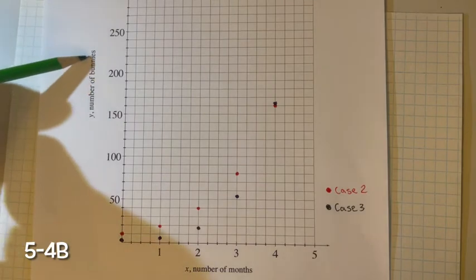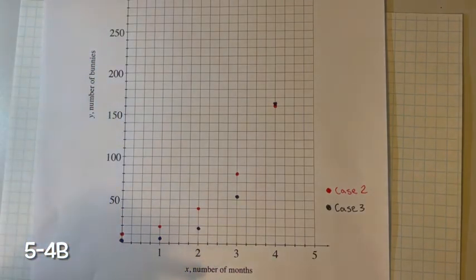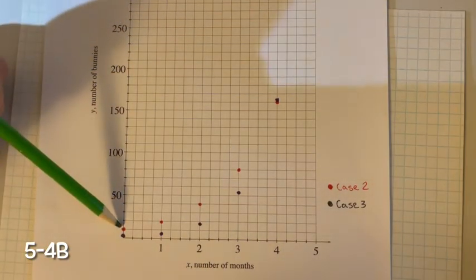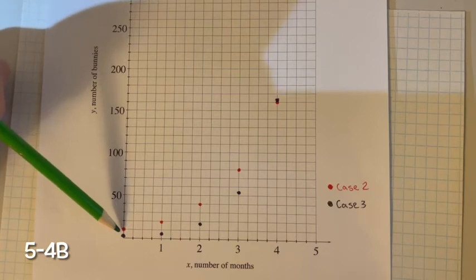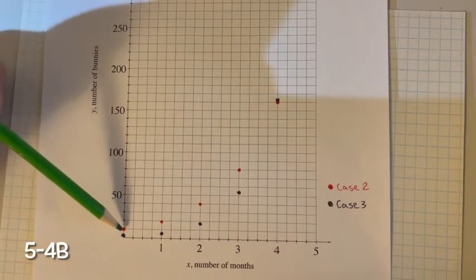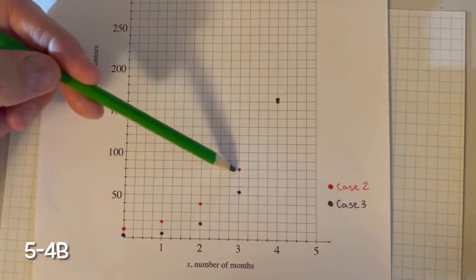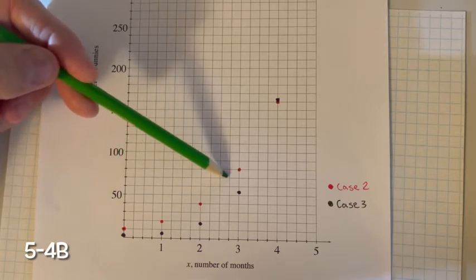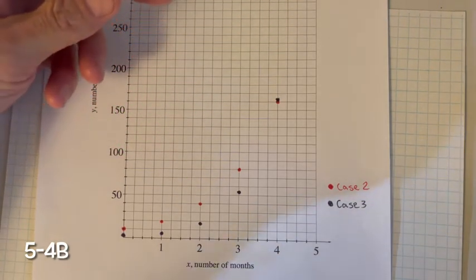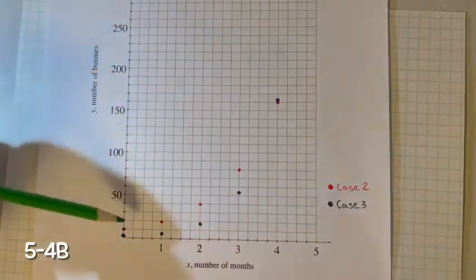We have the dependent variable, the number of bunnies, depends on the independent variable number of months. As for case 2, it starts out with more bunnies. As it increases exponentially, it starts out slow. The growth rate starts out slow and then increases very rapidly, and so it gets steeper.